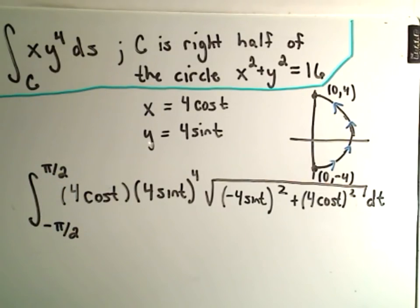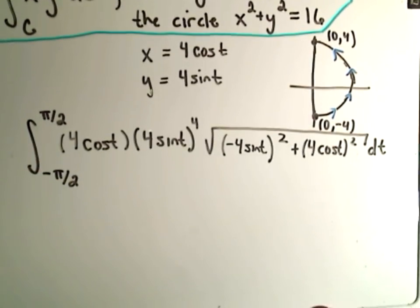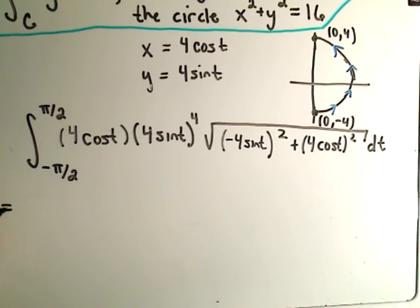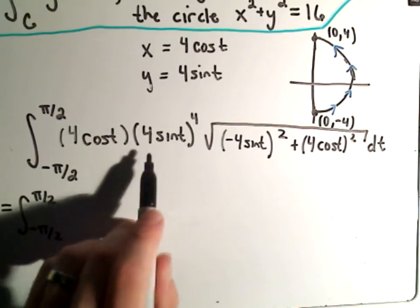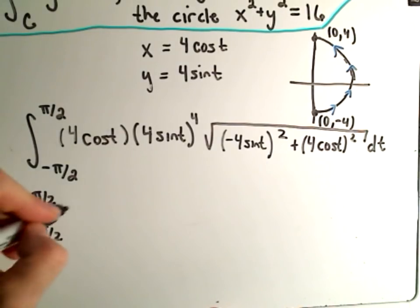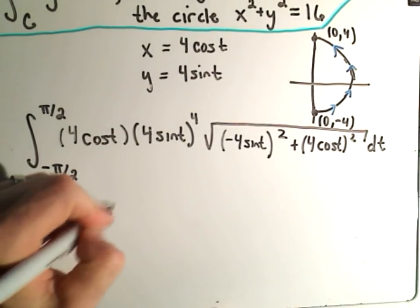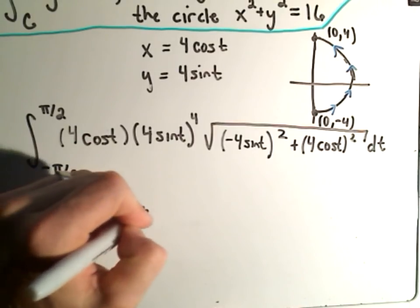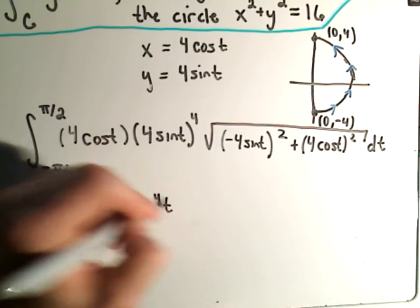So we'll see if we can't do this without too much trouble. So it says we'll get -π/2 to positive π/2. There's a 4. I'm going to pick up another 4 to the fourth. So I'm going to get 4^5 cos(t) times sin^4(t).